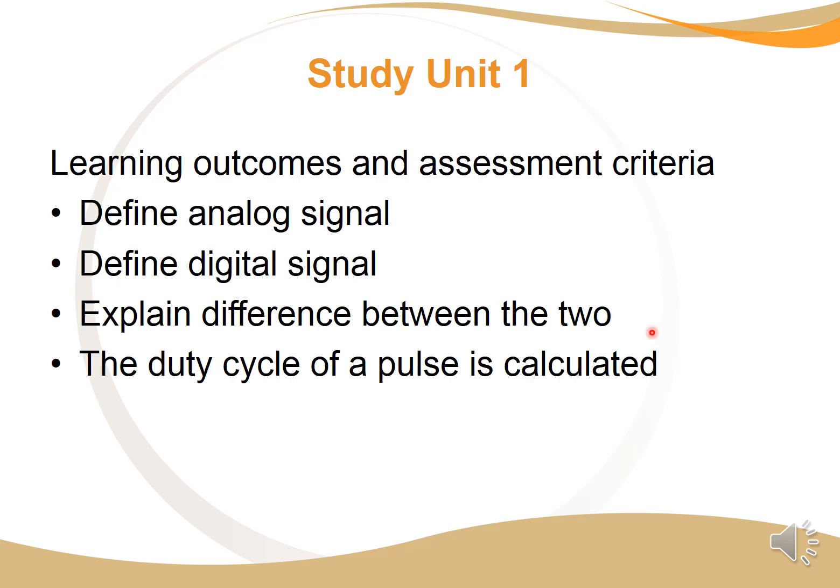After every study unit in your study guide, you will see that we have learning outcomes and assessment criteria. Essentially, this is the core fundamentals you need to learn from that specific study unit. Here we have defined an analog signal, which is a continuous signal. A digital signal is a discrete signal. The difference between the two is that the analog signal is continuous in nature, and the digital signal is discrete with certain specific sample time periods. And the duty cycle of the pulse we have calculated to work out the duty cycle and also the frequency of the pulse.